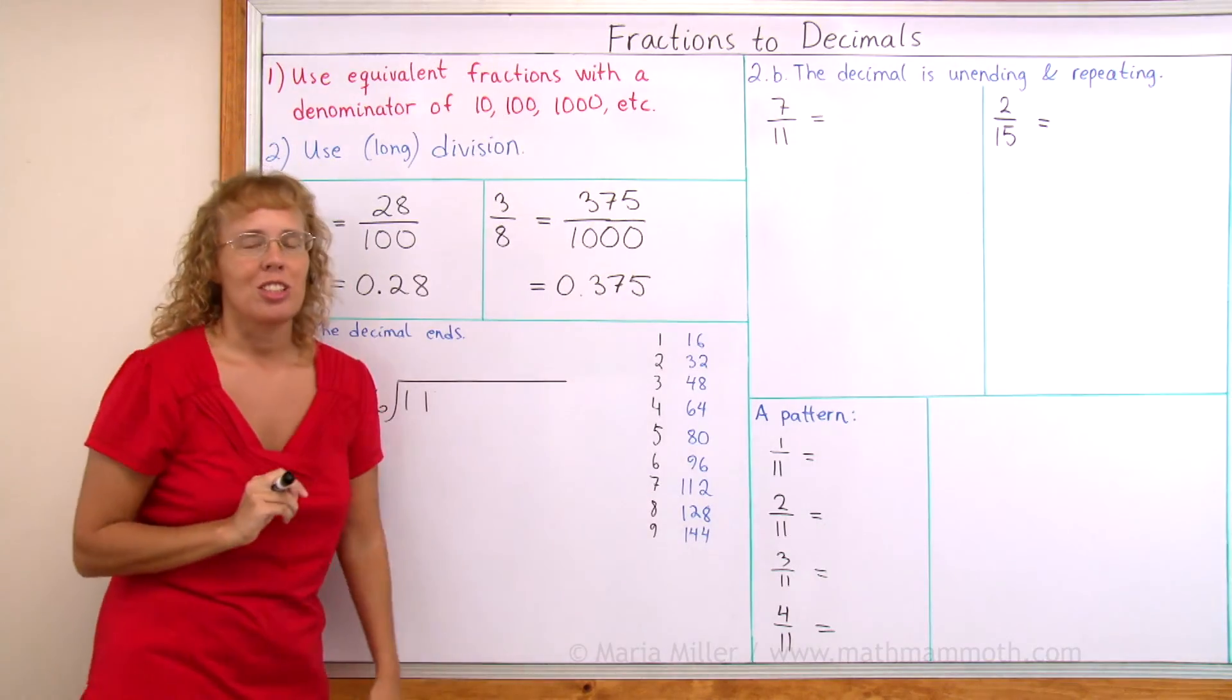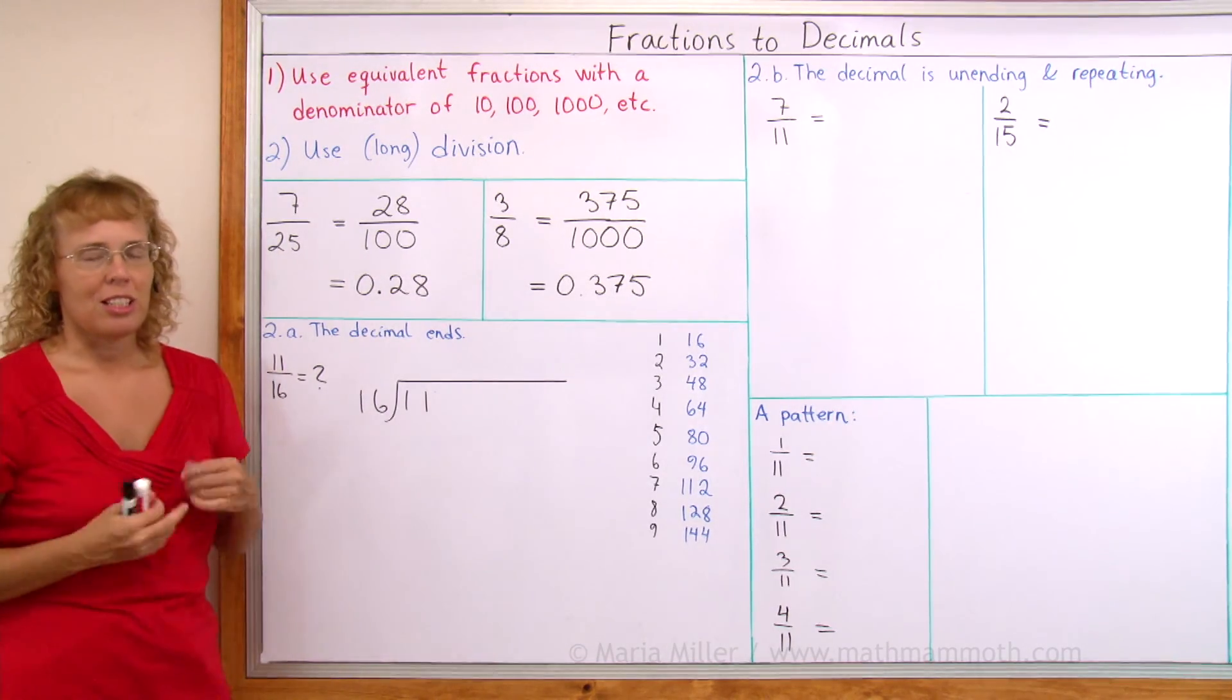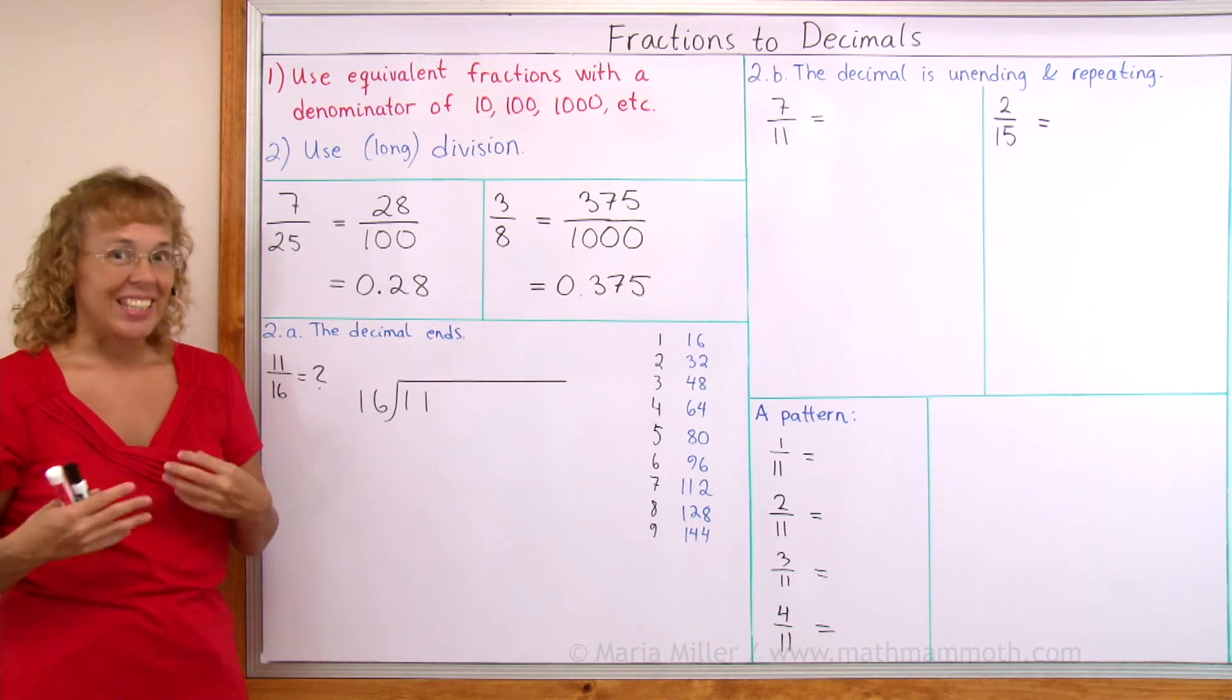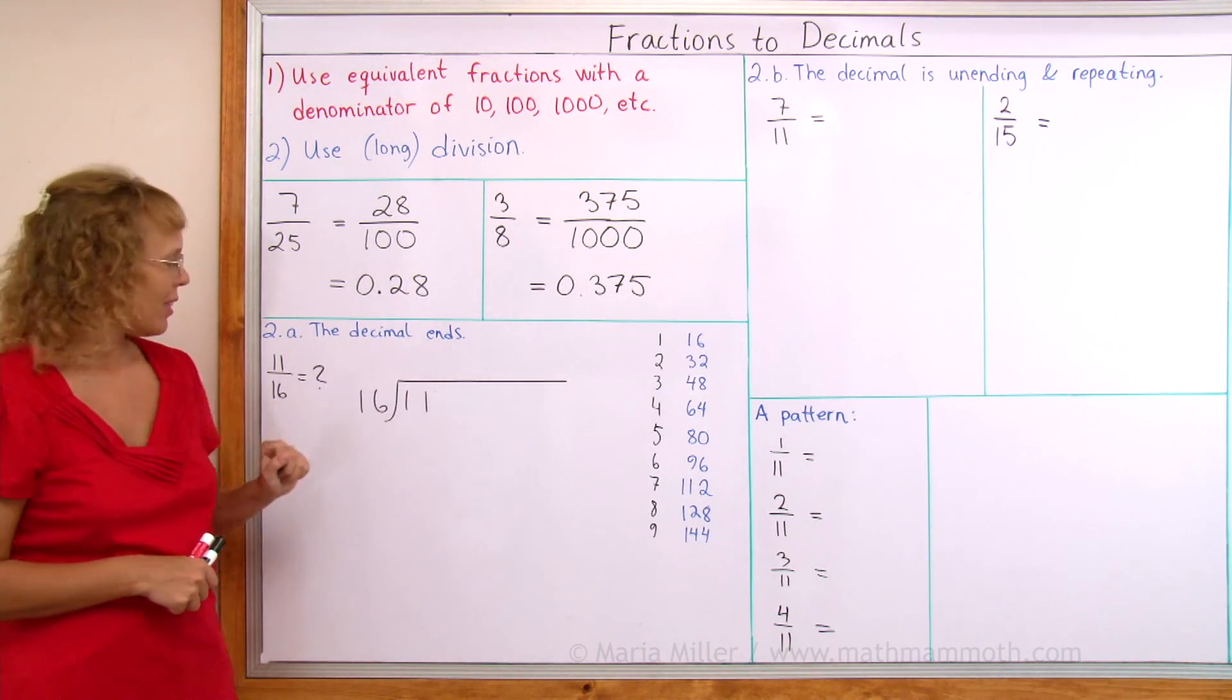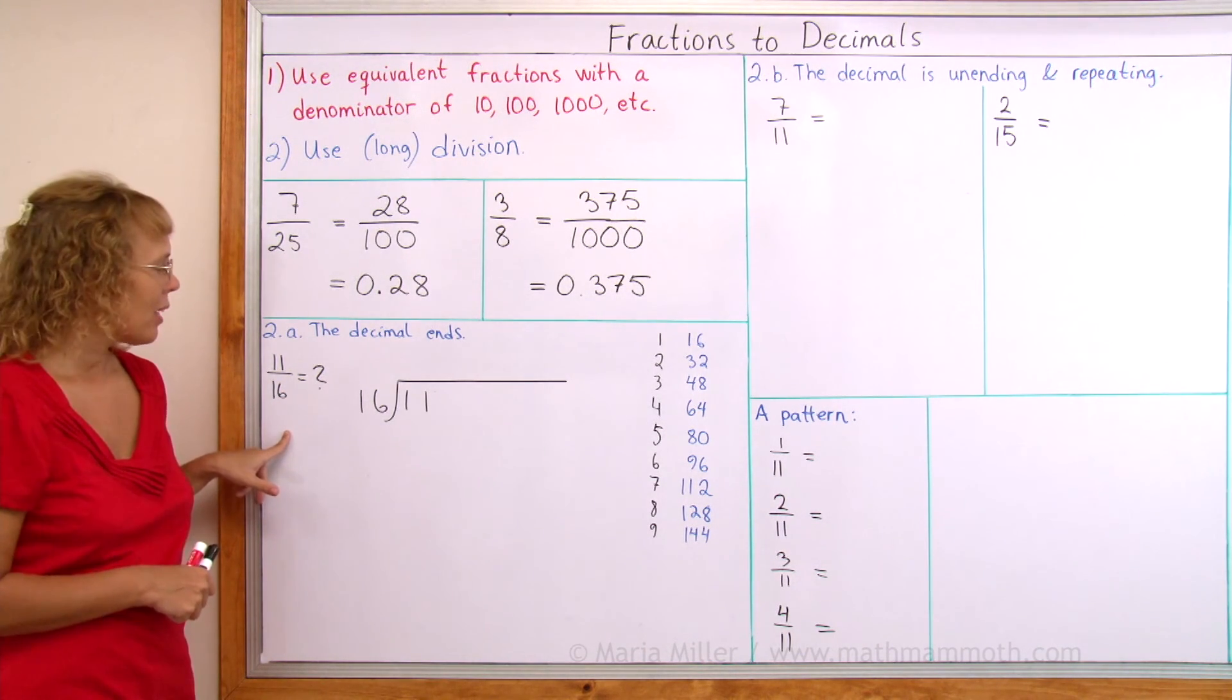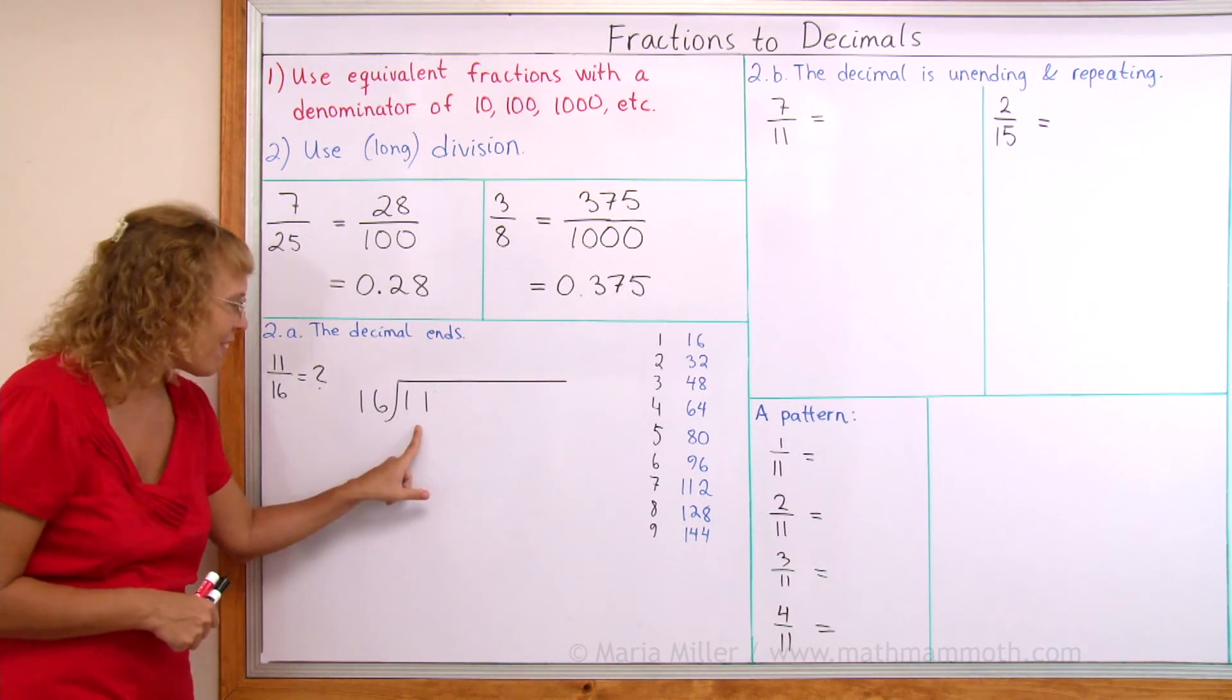But most fractions are not this kind. For most fractions, we need to use the second method. We need to divide. And I'm going to show you two basic cases. The first case being that the decimal will end. Let's say I have 11 sixteenths. I'm going to write this as a decimal, and I'm going to use long division.